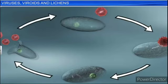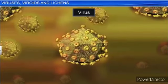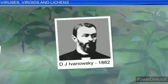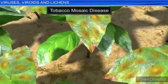Once they infect a cell, viruses take over the machinery of the host cell to replicate themselves. The name 'virus,' meaning venom or poisonous fluid, was given by D.J. Ivanovsky in 1892, who recognized certain microbes as causal organisms of the mosaic disease of tobacco. These were found to be smaller than bacteria because they passed through bacteria-proof filters.